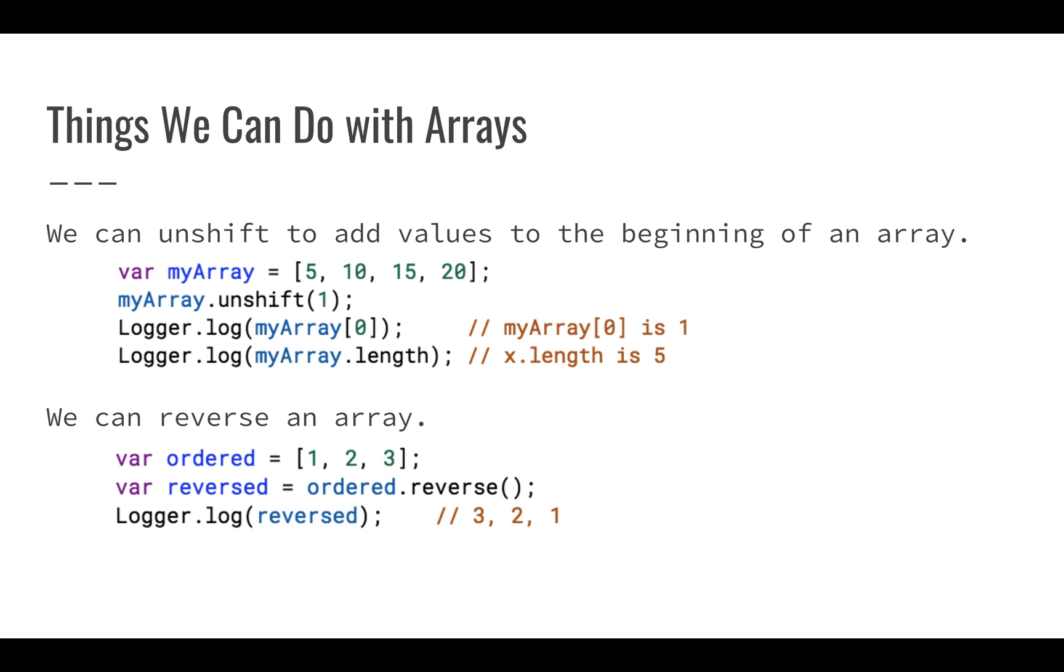We can do a lot of other things with arrays. We can unshift, which will add values to the beginning. So here I'm going to create an array that has 5, 10, 15, and 20. And then I'm going to unshift the value 1. So my new array will be 1, 5, 10, 15, 20. And if I look at what's in position 0, you will see that it is 1. If you were to go and enter this code in your script editor and just create a new function and run that function, you would see exactly that myArray[0] is 1. And that actually should be myArray.length, it should be 5.